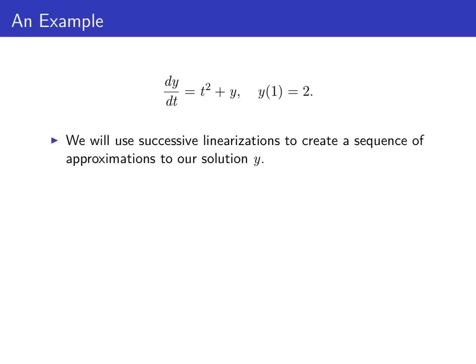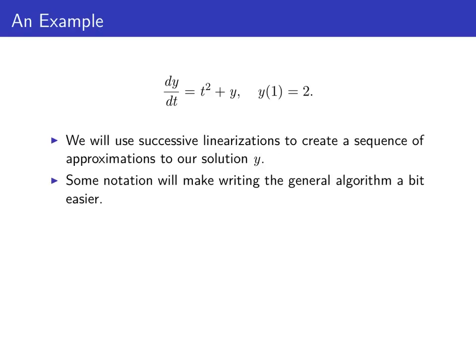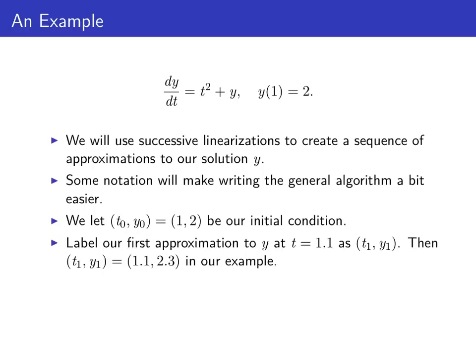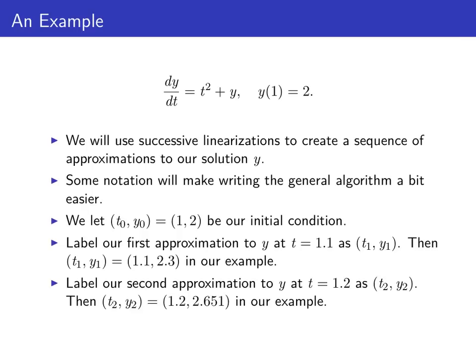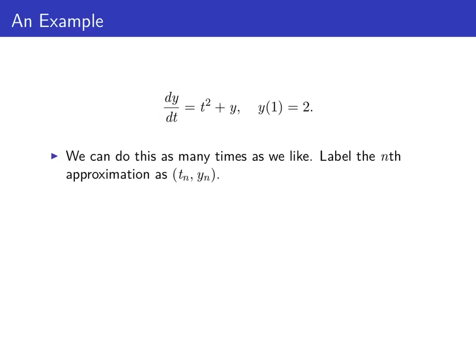Euler's method is an iterative process, so we use these successive linearizations to create a sequence of approximations to our solution y. To write down a formula, we need some notation. We let (t₀, y₀) be our initial condition (1, 2). Our first approximation is (t₁, y₁), so t₁ = 1.1 and y₁ = 2.3. Our second approximation is (t₂, y₂), with t₂ = 1.2 and y₂ = 2.651. We continue this, labeling the nth approximation as (tₙ, yₙ). Each time we find the next t value, we just add 0.1 to the previous t value, so tₙ₊₁ = tₙ + 0.1.